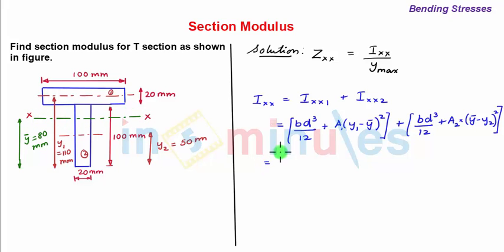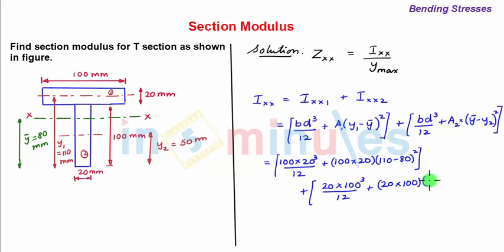So if we substitute the value for part one we have 100 into 20 cube upon 12 plus a1 is 100 into 20 y1 minus y bar distance is 110 minus 80 the whole square plus for part two we have 20 into 100 cube by 12 plus a2 is 20 into 100 y bar minus y2 is 80 minus 50 the whole square.